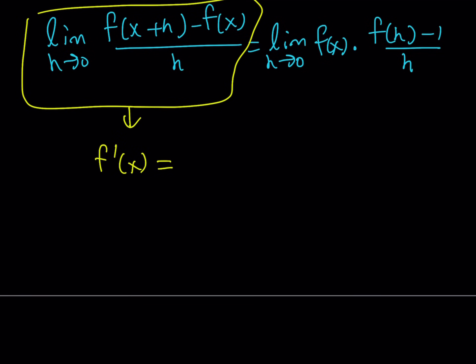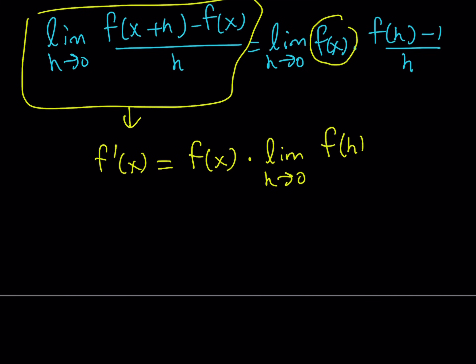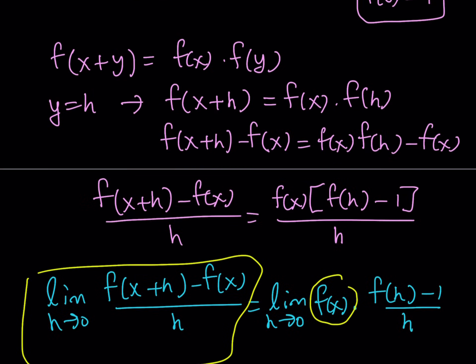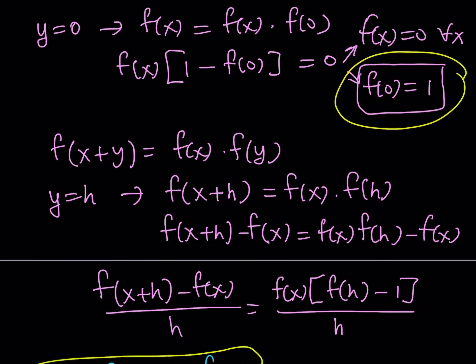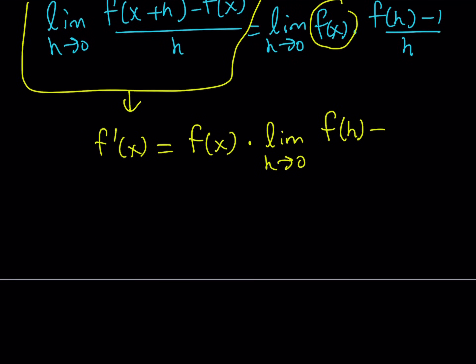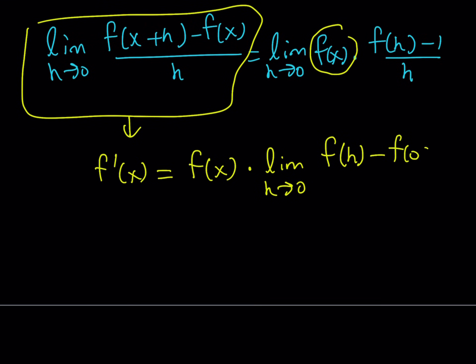What about the right-hand side? Since f of x does not depend on h, it's considered a constant as we take the limit as h approaches 0, so I can pull f of x out using the rules of limits. Then the rest is the limit as h approaches 0 of f of h minus 1 over h. This is the critical point — instead of replacing f of 0 with 1, we're going to do the opposite and replace 1 with f of 0. I can also write the h as h minus 0.